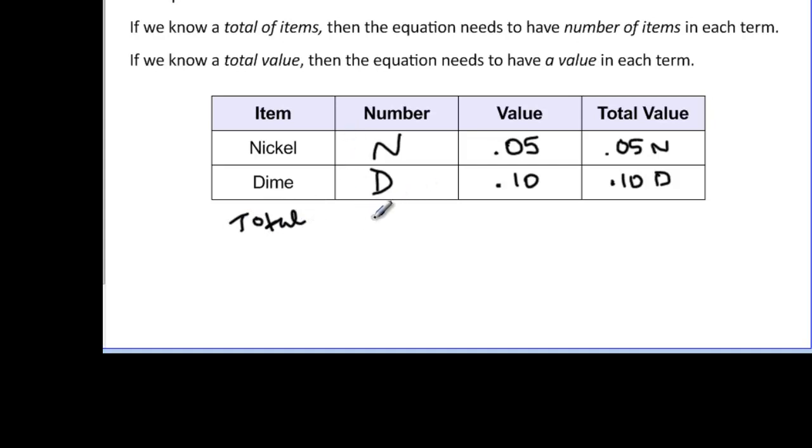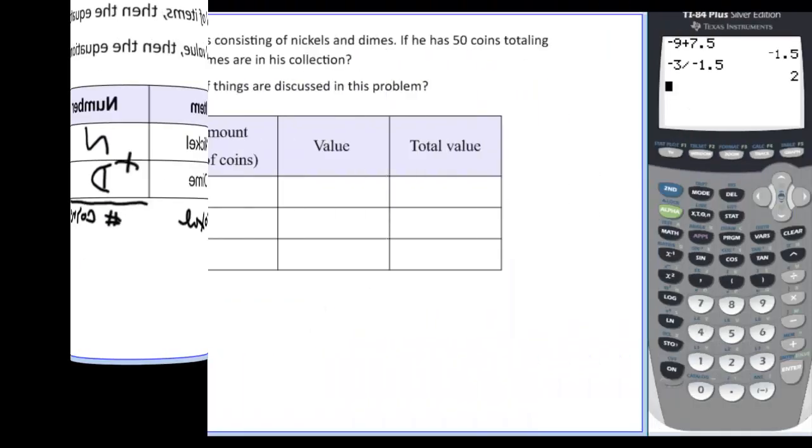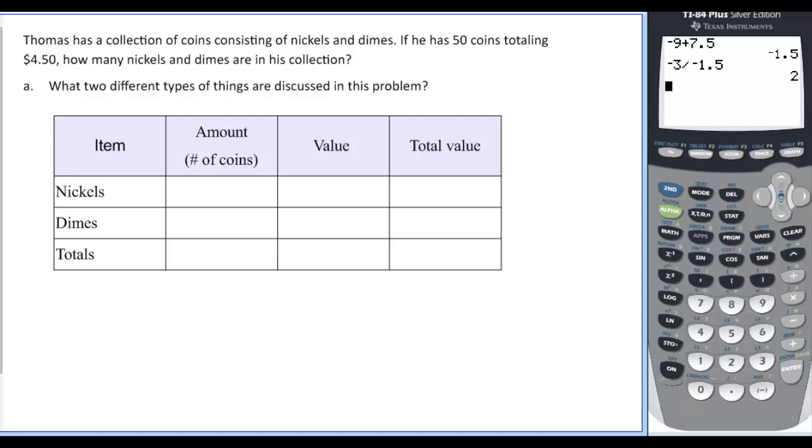And I would total here, I would have the total number of coins. And then I could just say n plus d is equal to the number of coins. And here I would have the value or total value of the coins. And then if I just add these two, I would have that equal to the total value of my coins.